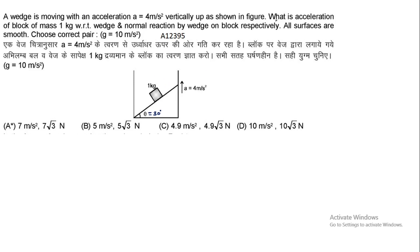तो इस 1 kg block का wedge के respect में acceleration कितना होगा, और normal reaction by wedge on the block क्या होगा? यहाँ पर यह wedge है और इस पर 1 kg block है। यह wedge ऊपर की तरफ 4 m/s² के acceleration के साथ जा रहा है और इस block का mass m = 1 kg है।